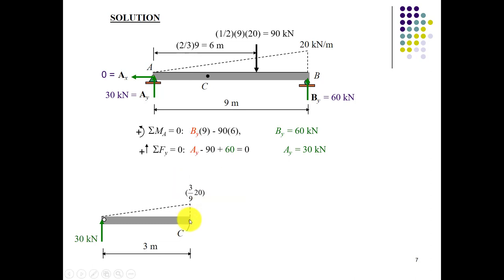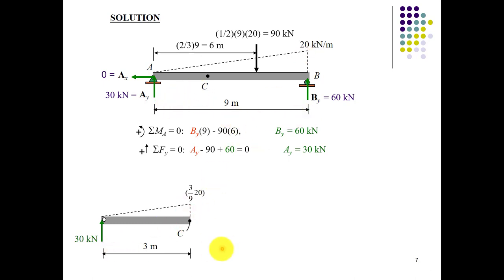By taking the section at point C and applying the similar triangle rule, we calculate the intensity at point C. With a distance of 3 meters, the intensity equals (3/9) times 20 kilonewtons per meter. Using the similar triangle: 20 divided by 9 equals x divided by 3, giving x equals (3/9) times 20. Here is the intensity at point C and the external reaction Ay at the support.